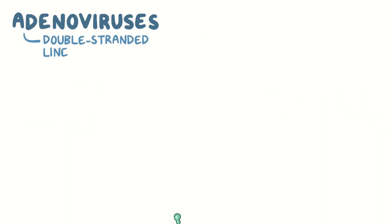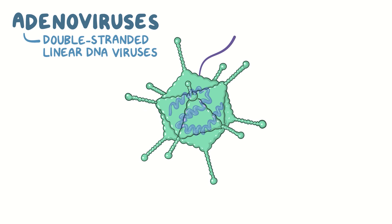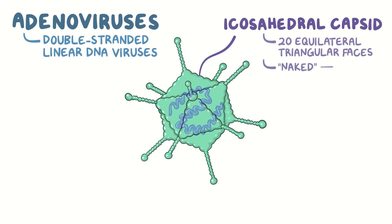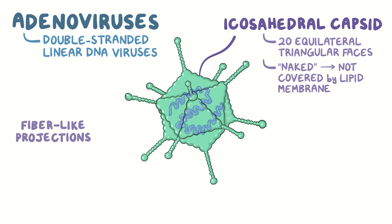Adenoviruses are double-stranded, linear DNA viruses surrounded by an icosahedral capsid, which is a spherical protein shell made up of 20 equilateral triangular faces. They're naked because the capsid isn't covered by a lipid membrane. Their capsid is unique among viruses because it has fiber-like projections from each of the 12 vertices of the shell.